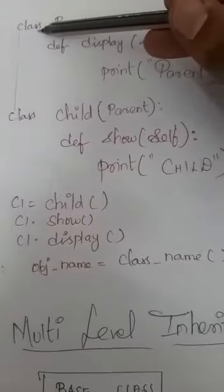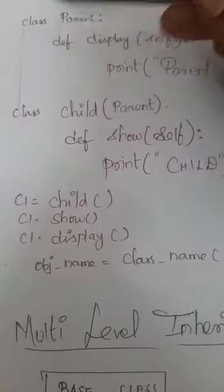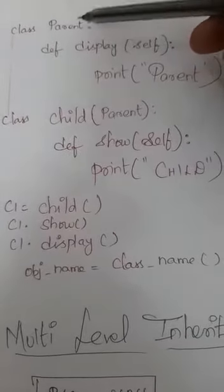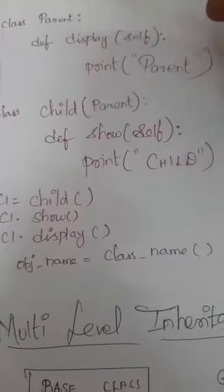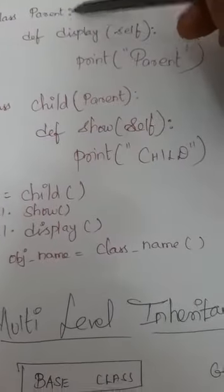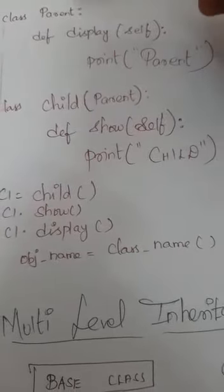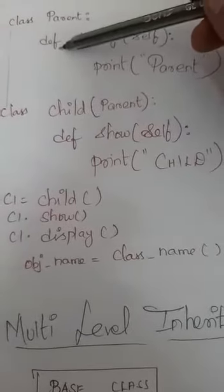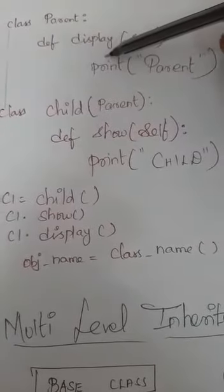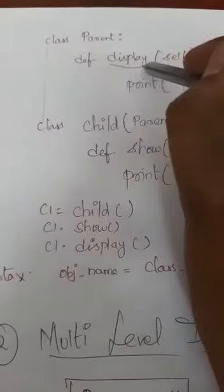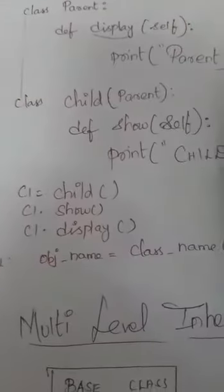How to create a class in Python? You write the keyword class followed by the class name. What is the class name? Class name is 'parent' followed by a colon, and here it is indented. Then what I am doing is I am defining a method. What is the name of my method? My method name is called 'display'.